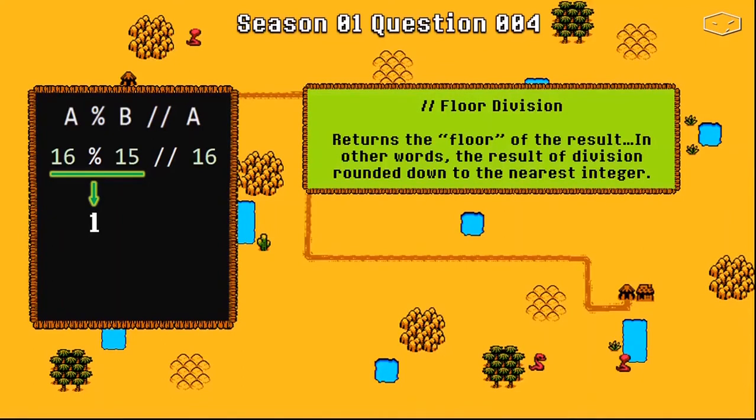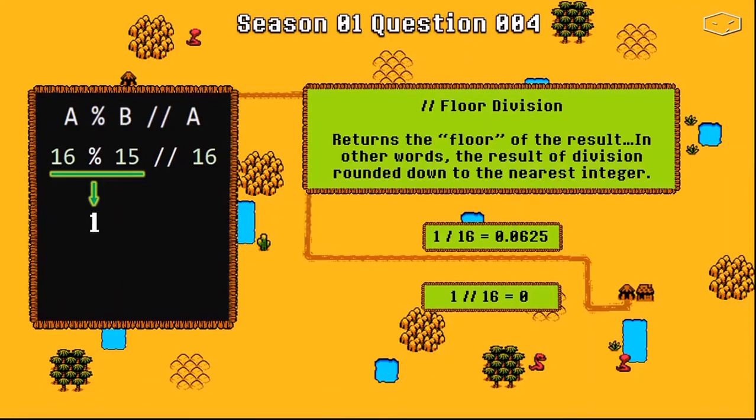So if we have a simple division, we have 1 divided by 16, we get 0.0625. And with the floor division we get the number 0, because the number is rounded down.